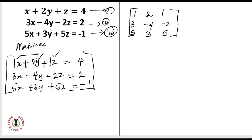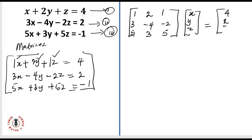The next matrix will be for the unknowns. We'll multiply so that I have x, y, and z. This will be equals to — the solution should form another set of matrices: 4, 2, minus 1.